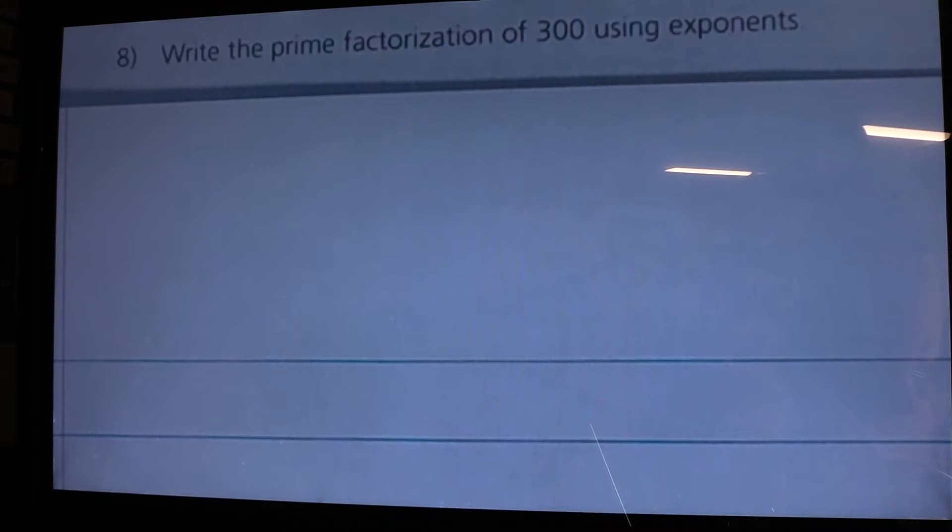It says, write the prime factorization of 300 using exponents. The strategy that I would use for solving this is to make factor trees, and then once I get the number factored out, I can go ahead and use exponents to do the prime factorization.